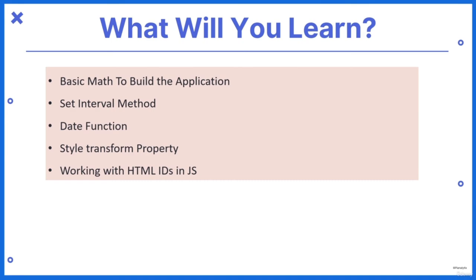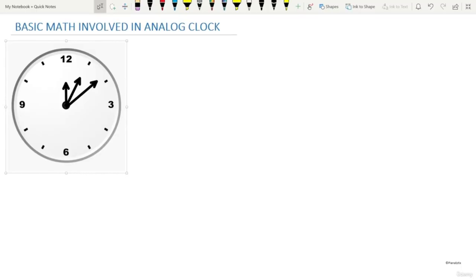Here are the project specifications. Now let us look at what you're going to learn from this project. First, you are going to learn the basic math that is involved in making of this application. By basic math, I'm referring to the mathematics involved in how a clock works - you will get to know by how many degrees the minute hand, second hand or the hour hand should move at a given time. And then you will learn about the setInterval method, then the JavaScript date function, and you will also get to know about the style transform property of HTML. And then you will get better at using IDs in JavaScript. So with so many things to learn, let's get started.